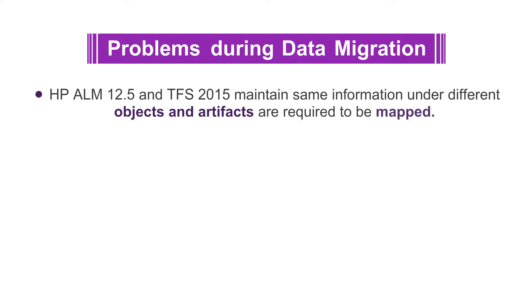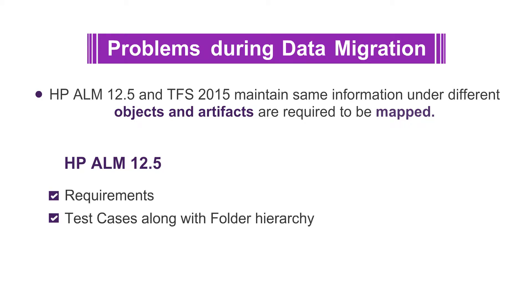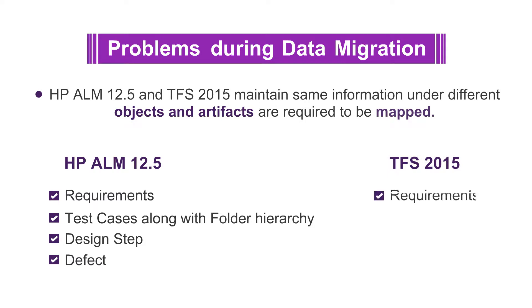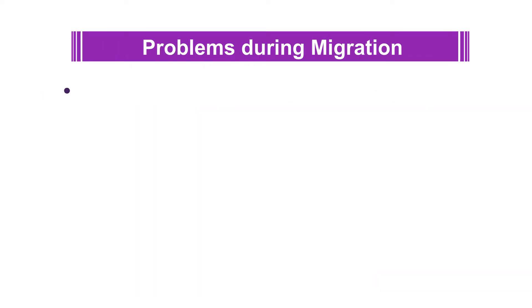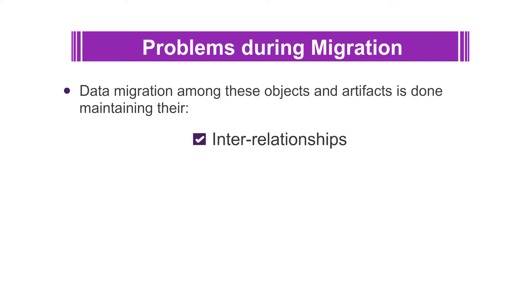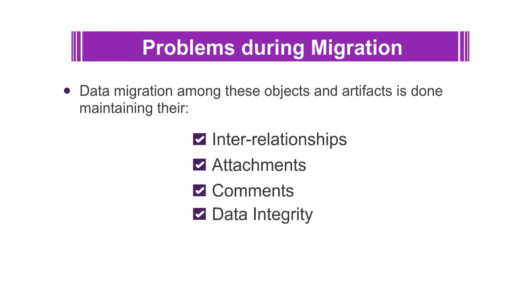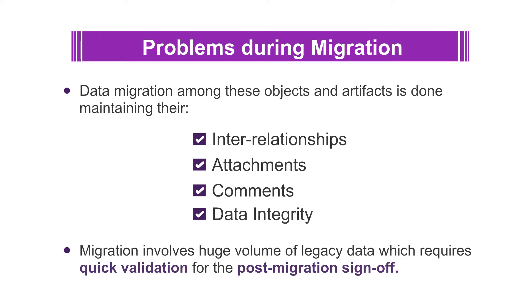Migration involves moving legacy data records of various HP ALM 12.5 objects like requirements, test cases along with the folders of hierarchy, and design steps to corresponding TFS 2015 artifact types like requirements, test plan, test suite, test step, and bugs, while maintaining their interrelationships, attachments, comments, and preserving data integrity during the process. Migration typically involves a huge volume of legacy data, which requires quick validation for the post-migration sign-off.